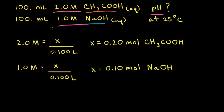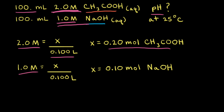Starting with the weak acid, we use the molarity equation: molarity equals moles over liters. The concentration is 2.0 molar and the volume is 100 milliliters, or 0.100 liters. Solving for x, we find 0.20 moles of acetic acid. For the strong base, the concentration is 1.0 molar and the volume is 100 milliliters, or 0.100 liters, giving x equal to 0.10 moles of NaOH.